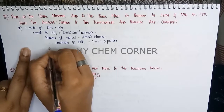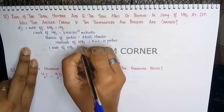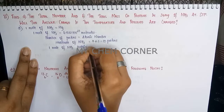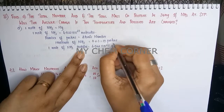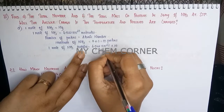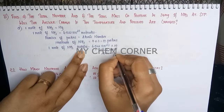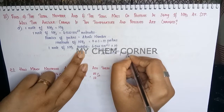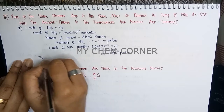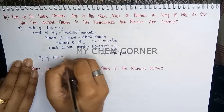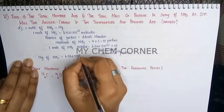One mole of ammonia contains Avogadro's number multiplied by 10, which is the number of protons per molecule. Calculating this gives 6.022 × 10²⁴ protons. So 17 grams of ammonia contains 6.022 × 10²⁴ protons.